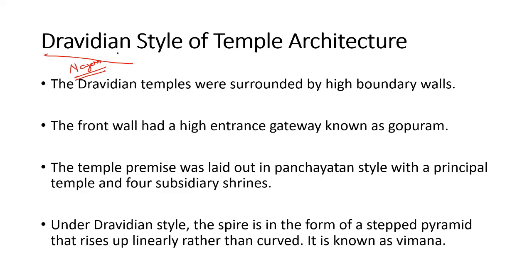In the previous class I discussed the four stage development and the features of the Nagara style of architecture. We also discussed the sub-schools under Nagara style of architecture — like the Odisha school, central India Khajuraho, and the west part of India with the Solanki rulers.